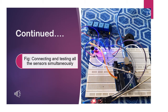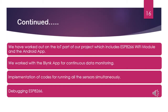After running the device with all sensors connected, we got favorable and accurate results — the same results we had when testing them one by one. This photograph shows the connection with all sensors running simultaneously and working perfectly. All the work done so far covers the hardware part — the controller and sensor part. Now comes the IoT part of our project, which includes the ESP8266 Wi-Fi module and the Android phone. For this we need to work with the Blynk app for continuous data monitoring and implementation of codes for running all sensors simultaneously.